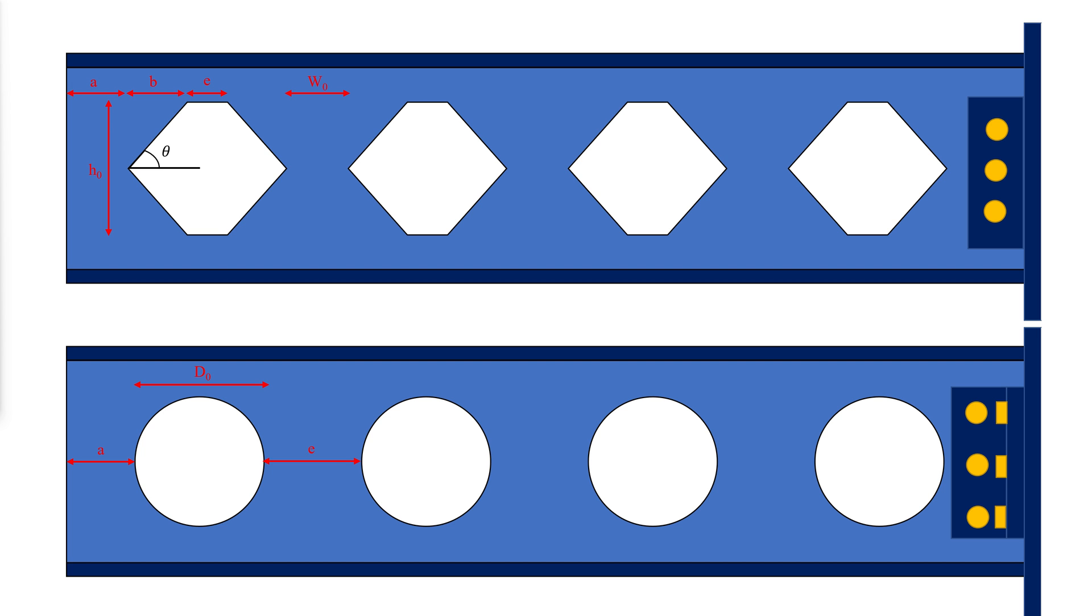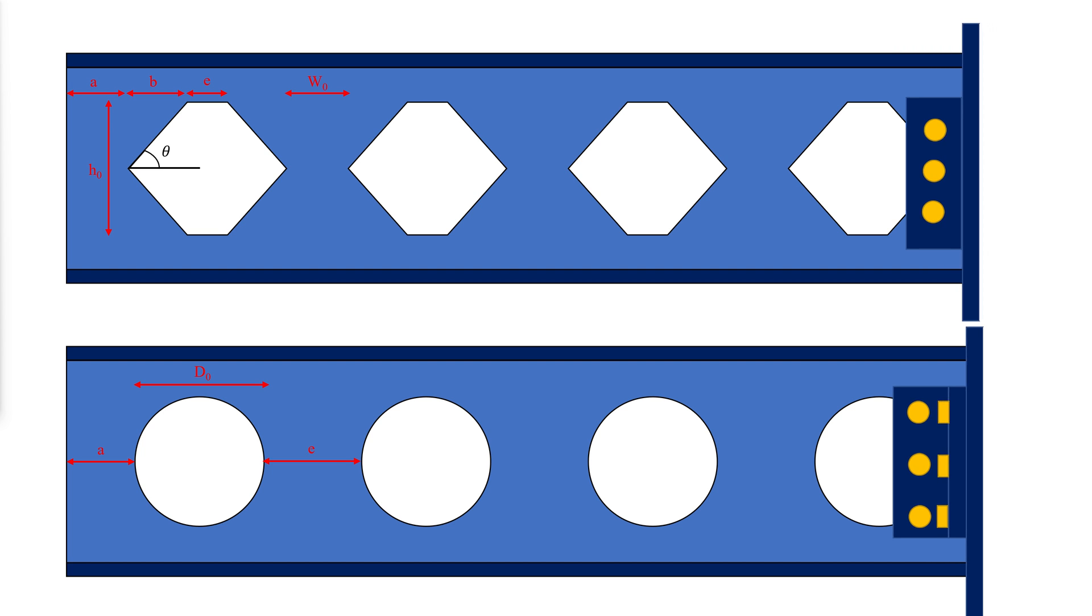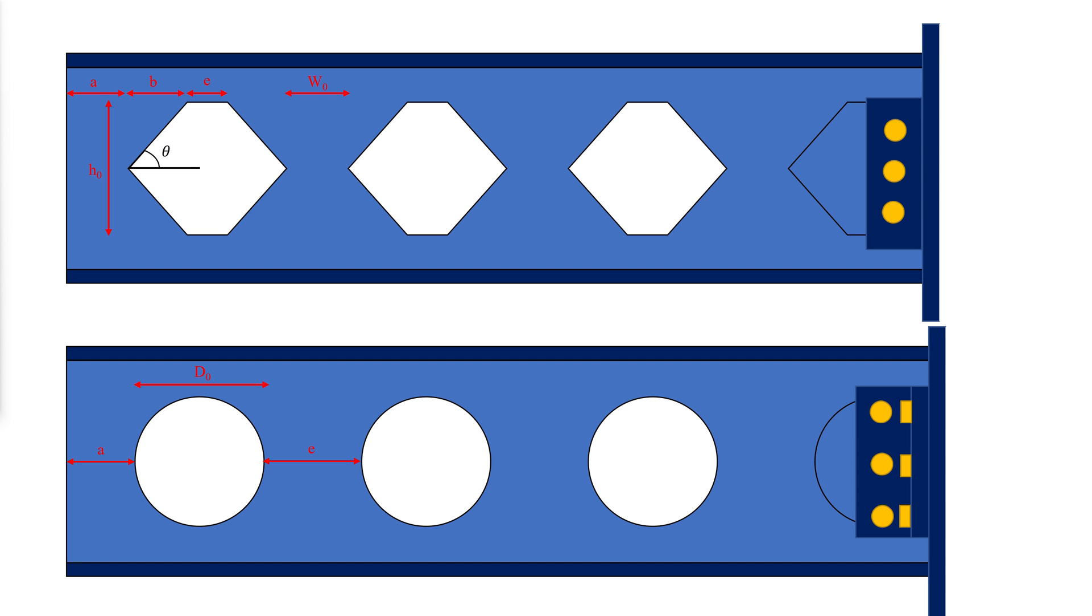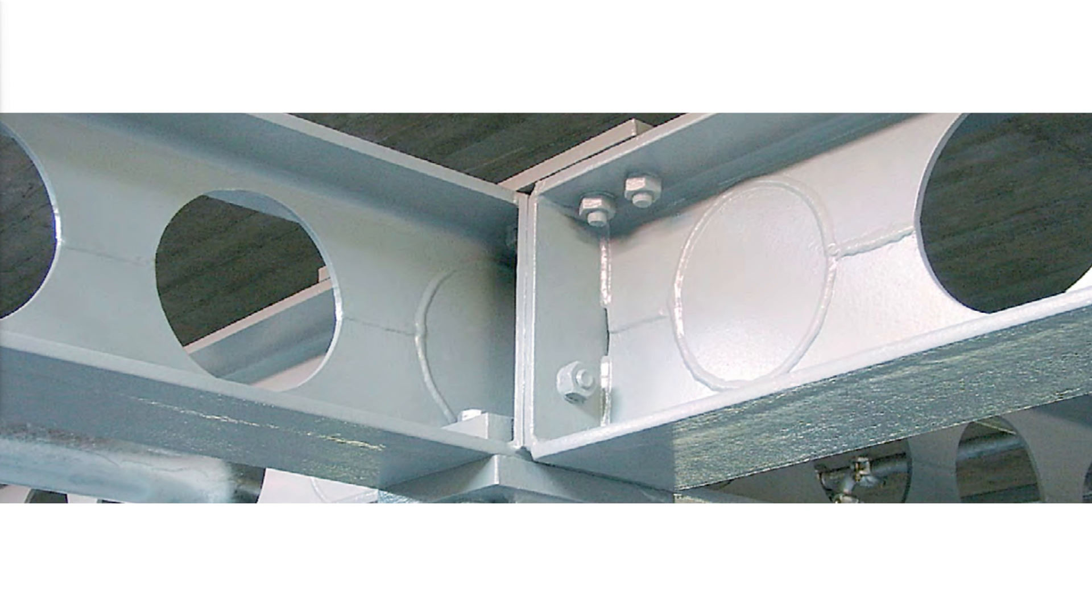In cases where this cannot be achieved, a partial or complete opening fill will be shop installed by the castellated beam supplier to allow the end connection to be made. During the design process, opening spacing should be optimized to avoid infills when possible to minimize the cost of the added material and labor.